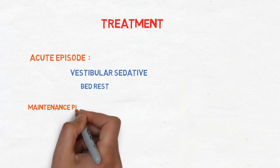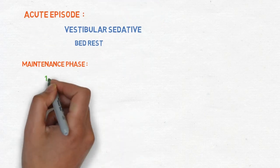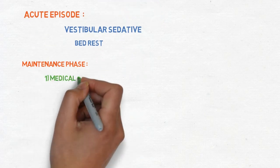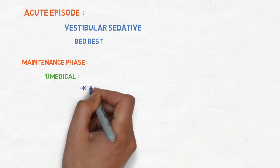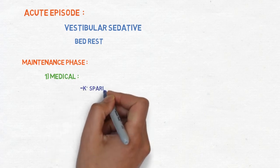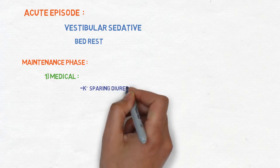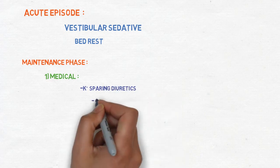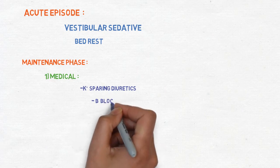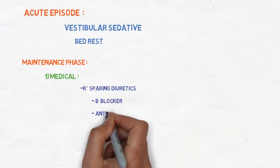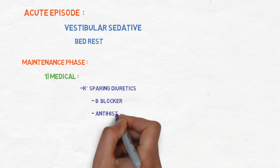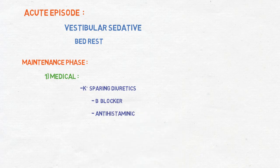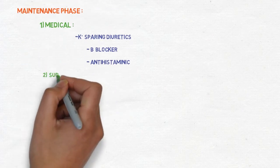In maintenance phase there are different types of procedures we can apply. The first one is medical. In that we can give potassium sparing diuretics. They can take away excess water from the body and therefore there is reduction in the production of endolymph. Another one is beta blocker. They are useful for increasing the absorption and antihistaminics. They increase the blood supply to the inner ear and therefore they also contribute to absorption of the endolymph.